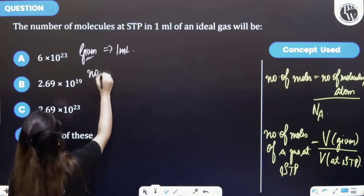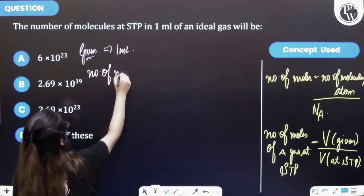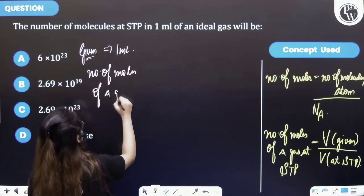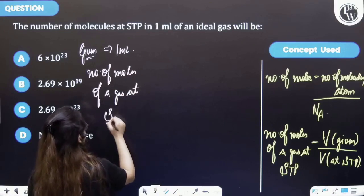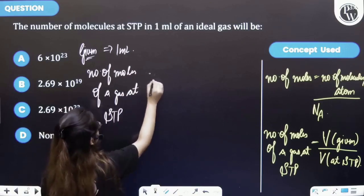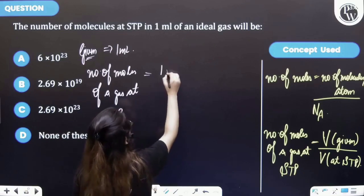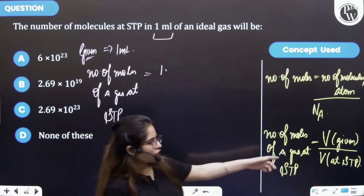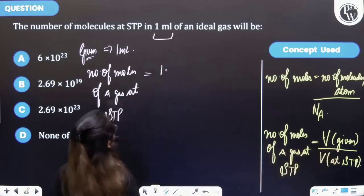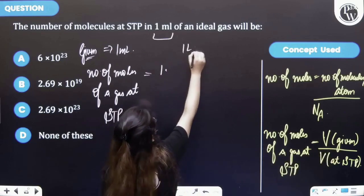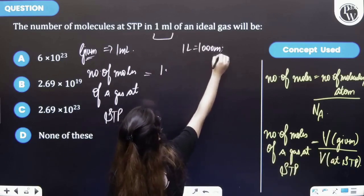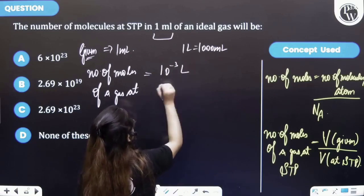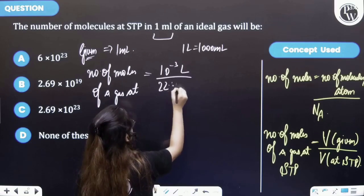It will be equal to number of moles of a gas at STP. It will be equal to 1 ml. You have given 1 ml here, but volume used is in litres. So 1 litre is equal to 1000 millilitres, and so you will be having 10^-3 litres divided by 22.4 litres.